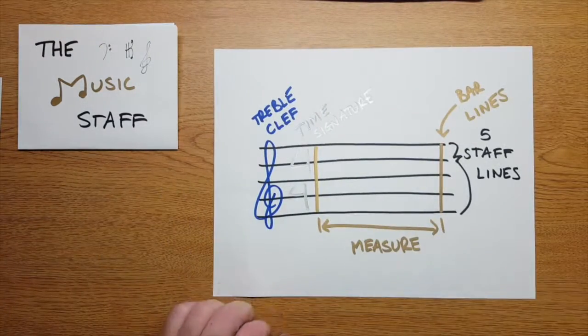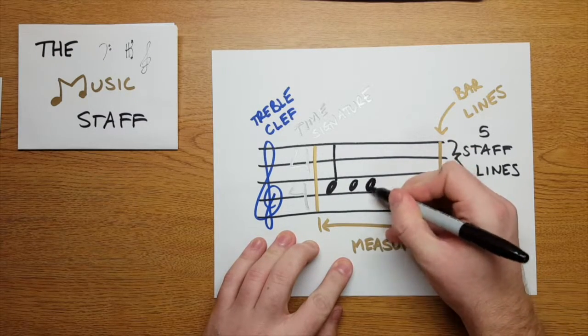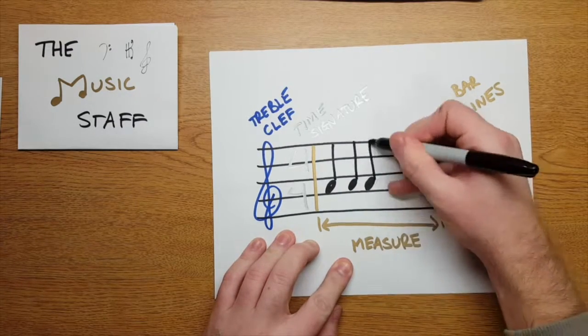So let's bring those rhythms back to our music staff. Remember how I said that time signature was 4-4? Well that top number is important. It tells me how many beats are in my measure.